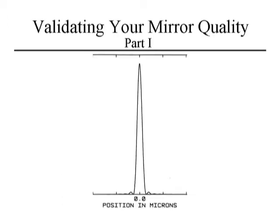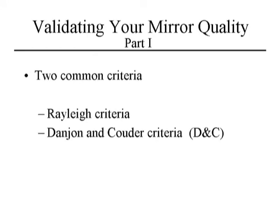The point spread function shows a ramp up to peak intensity and back down, with rings on either side. The two most common criteria used to judge mirrors are the Rayleigh criteria — more commonly known as the Rayleigh quarter-wave criteria — and the Danjon-Couder criteria. These are two separate criteria: they say different things and mean different things, though a mirror satisfying either one will be one you'll be proud of.